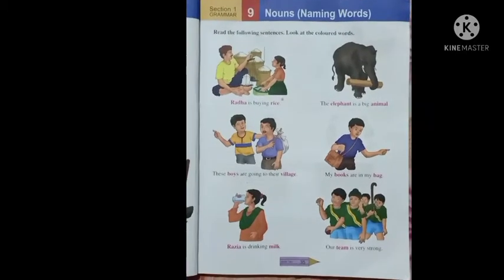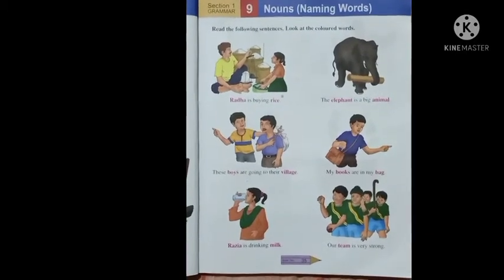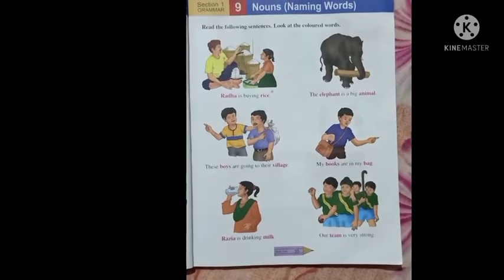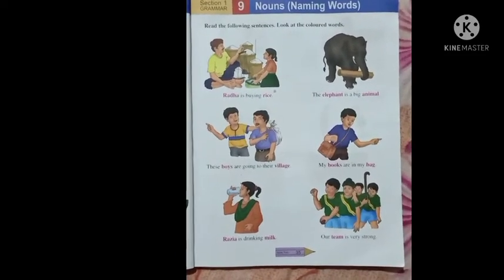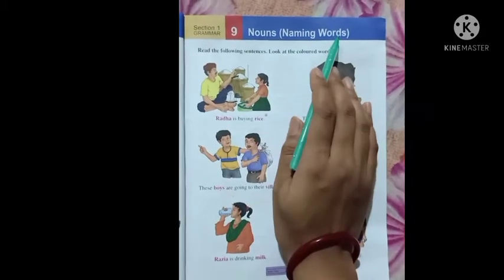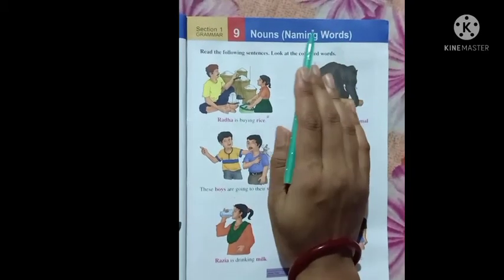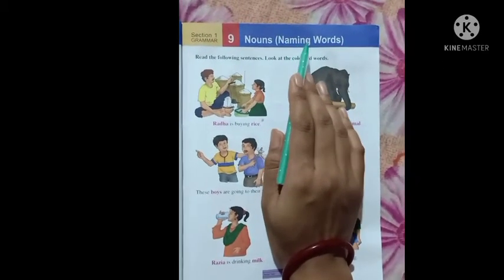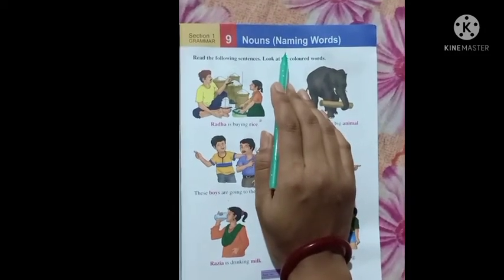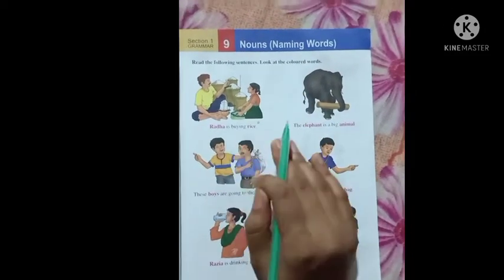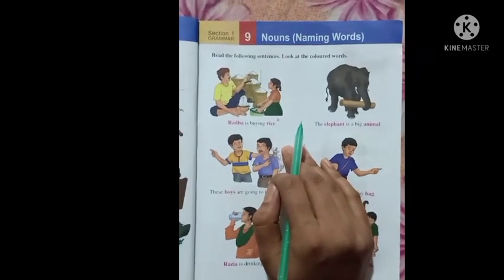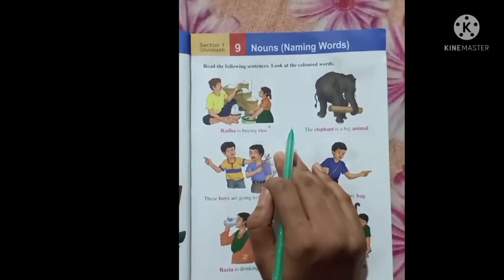Hello students. Today we will learn Chapter number 9: Nouns. Open your book at page number 35. Nouns meaning naming words. Everything under the sky is a noun, meaning we see many things around us, so everything has a name. This name is called a noun.